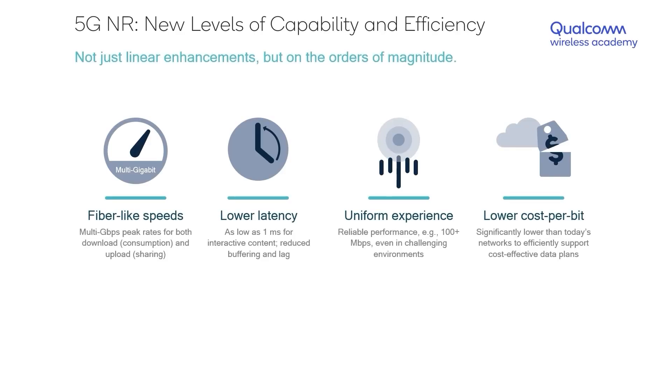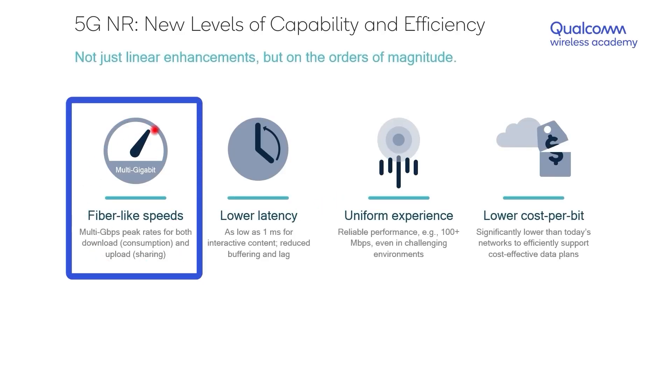Let's focus on some of the KPIs, or key performance indicators, that 5G will be judged by and what are some of its high-level capabilities. First up, as with any cellular communication technology, would be its data speeds, throughputs, or bitrates as engineers also like to call those.